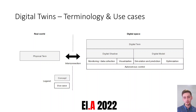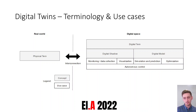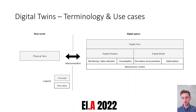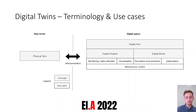You can combine the digital shadow and the digital model to achieve autonomous control. Autonomous control means you have a feedback loop where you collect real-time data with historical data, make simulations or predictions, make optimizations, and then make decisions about how to operate the physical twin.